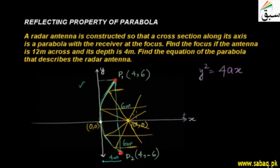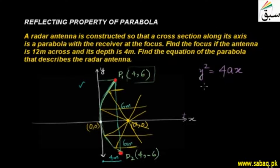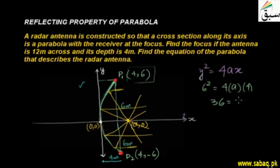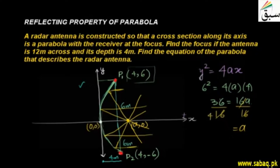Since this point lies on the parabola, I can substitute into the equation. So: 6² = 4 × a × 4, which gives 36 = 16a. Therefore a = 36/16 = 9/4. The focus is at (9/4, 0).